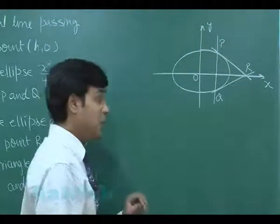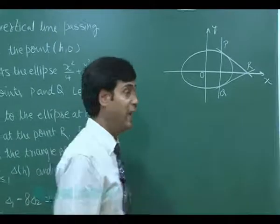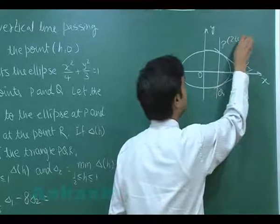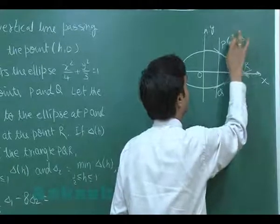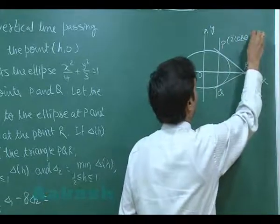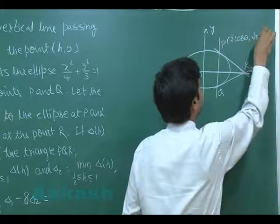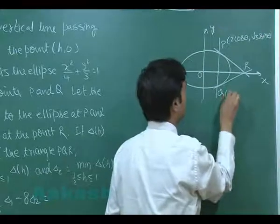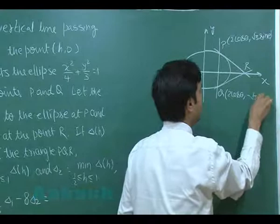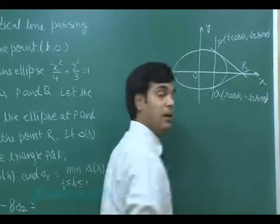Now, the ellipse is given to me. I can assume the general points on the ellipse. Point P, that is simply (2cosθ, √3sinθ). Similarly, Q is (2cosθ, -√3sinθ).